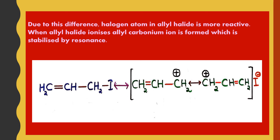When allyl halide ionizes, an allyl carbonium ion is formed which is stabilized by resonance. Take allyl iodide as an example: CH2=CH-CH2I (allyl iodide) ionizes to give the allyl carbonium ion CH2=CH-CH2⁺, along with I⁻ as the iodide ion. The pi bond between the first two carbons shifts to the right-end carbons, and the positive charge is shifted to the left-end carbon — this is the allyl carbonium ion being stabilized by resonance.